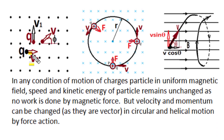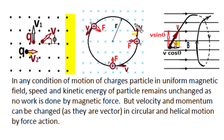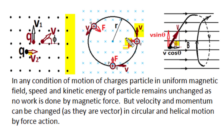In all these conditions — whether the angle gives circular motion or helical motion — the particle's displacement is along the direction of instantaneous velocity, and the magnetic force remains always perpendicular to the resultant instantaneous velocity. Because force and displacement are at 90 degrees, the magnetic force does no work on the moving particle. Therefore, kinetic energy and the magnitude of velocity or speed remain unchanged. The force produces acceleration that changes only the direction of velocity, not its magnitude.